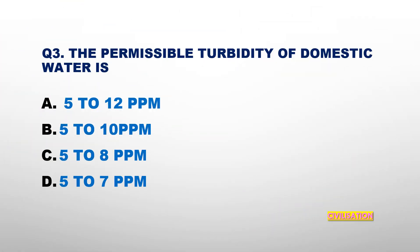Question number 3: The permissible turbidity of domestic water is — 5 to 12 parts per million, 5 to 10 parts per million, 5 to 8 parts per million, or 5 to 7 parts per million? The answer is 5 to 10 parts per million.